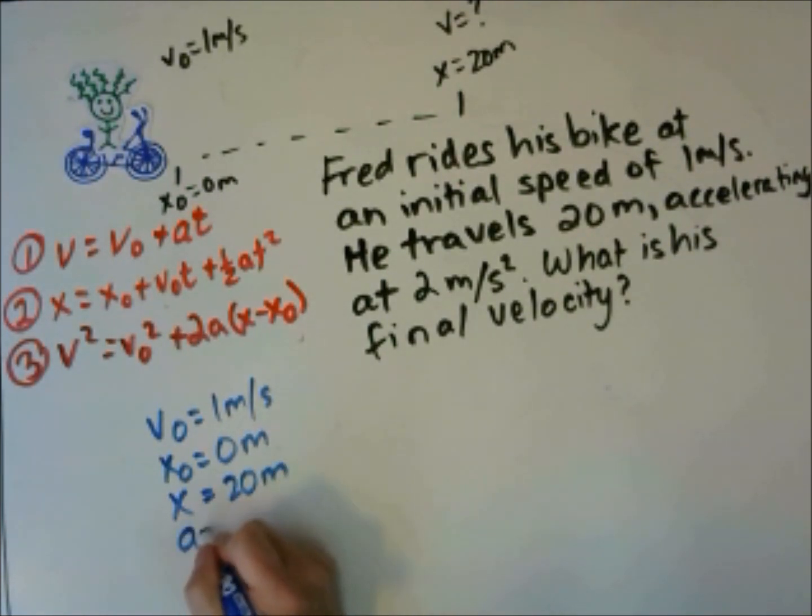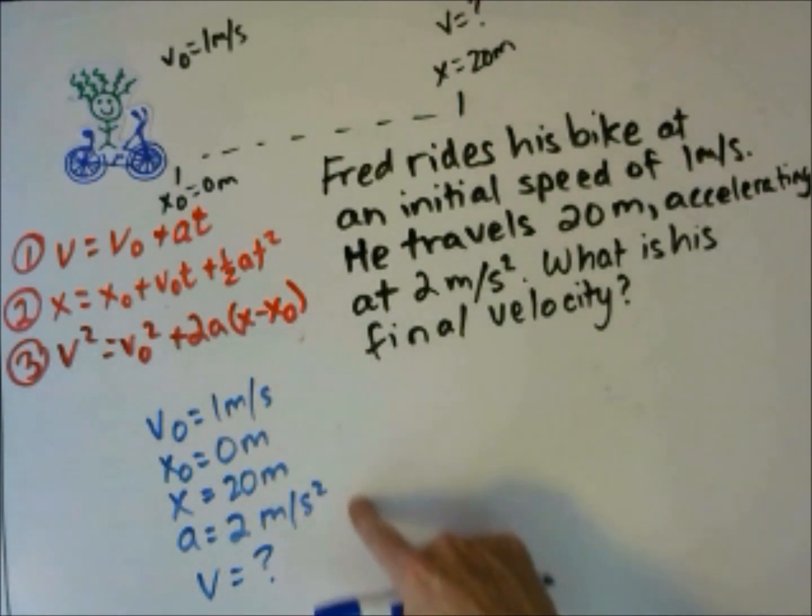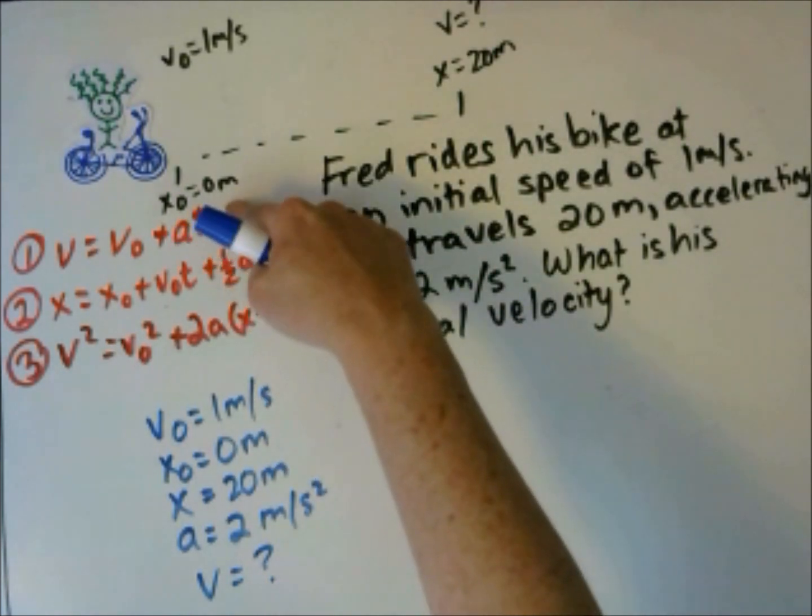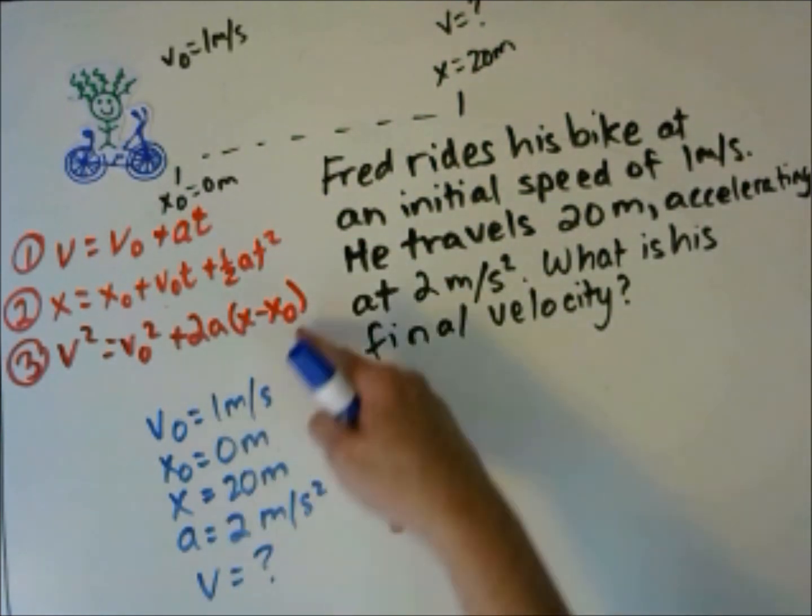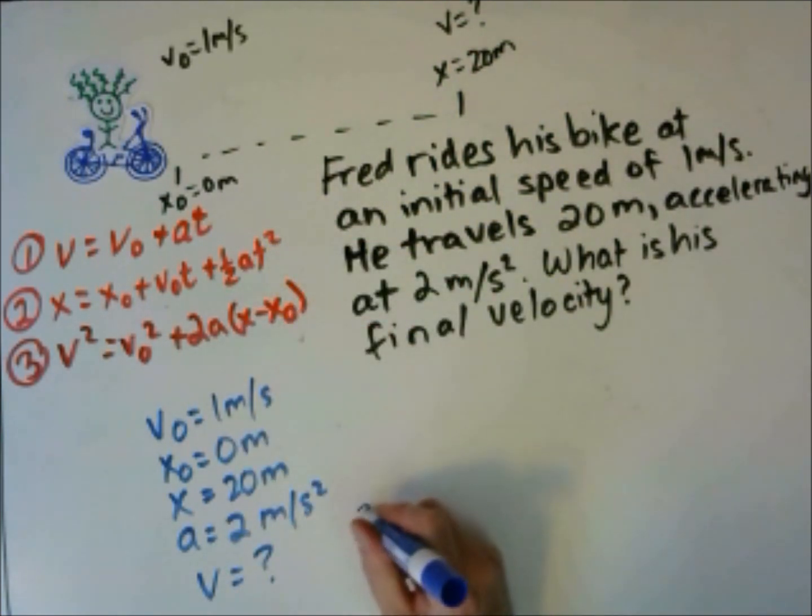His acceleration is 2 meters per second squared, and we want to know his final velocity. Which equation includes all of these variables? The first one does not have position. The second one does not have final velocity. The third equation is the best equation.